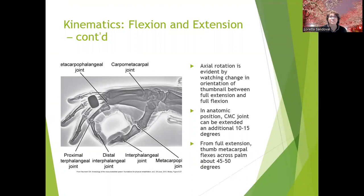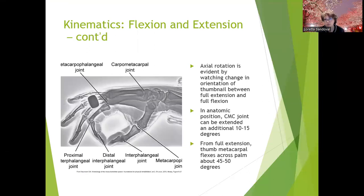You can observe axial rotation at the carpometacarpal joint by watching the orientation of the thumbnail between full extension and full flexion. In anatomical position the CMC joint can be extended about an additional 10 to 15 degrees from relaxed anatomical position. From full extension, the thumb metacarpal flexes across the palm about 45 to 50 degrees. I don't expect you to know the exact degrees — just to get a concept of what the range of motion is.